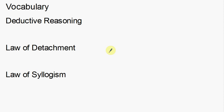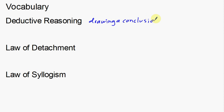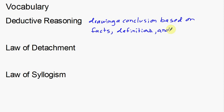In this video, I'm going to talk about some vocabulary. The three vocabulary words I'm going to talk about are deductive reasoning, law of detachment, and law of syllogism. First off, I'm going to talk about deductive reasoning. Deductive reasoning is your basic ability of trying to draw a conclusion based on some predetermined properties, definitions, or facts. So let's write that out: deductive reasoning is drawing a conclusion based on facts, definitions, and properties.